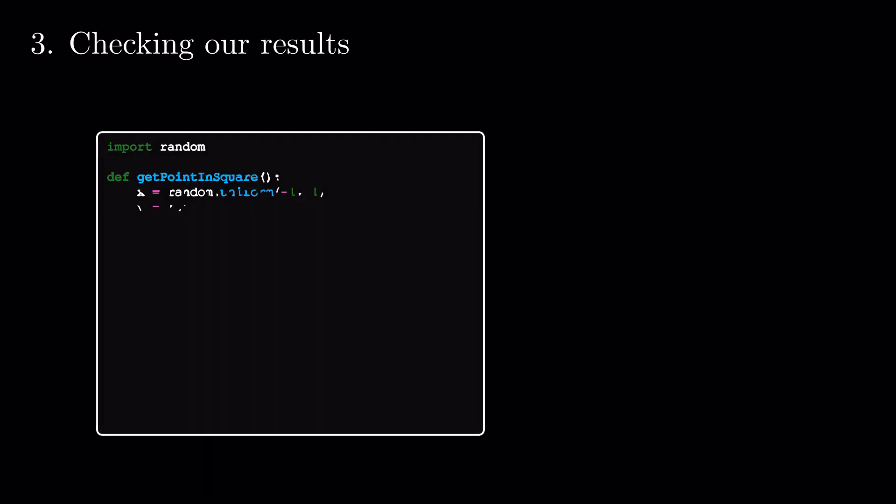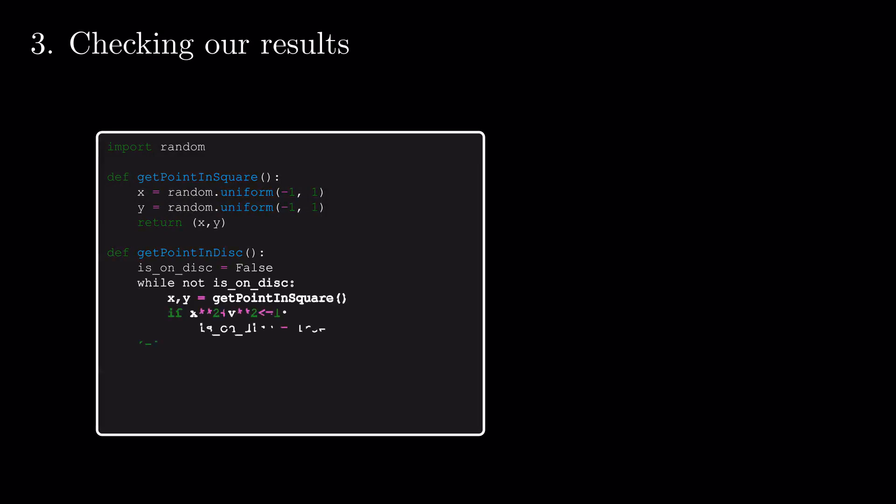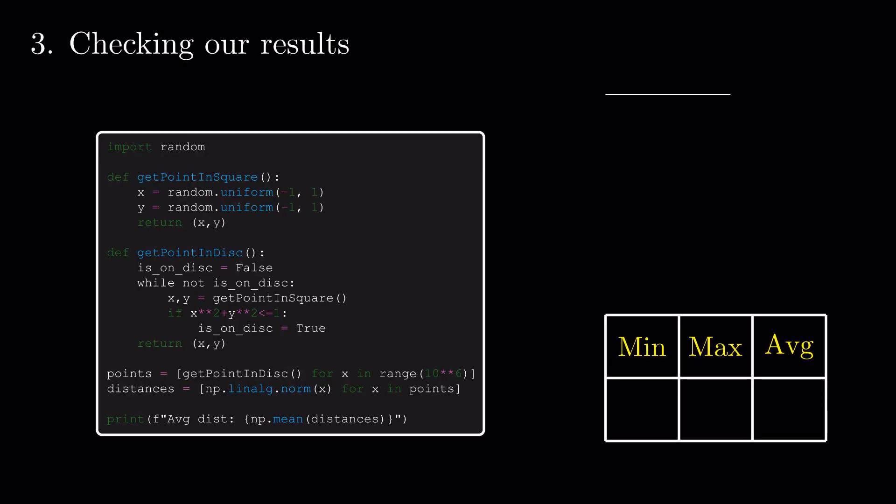And, the last method to find the expected distance is to simulate points on the disk using the given distribution. The code that I propose uses a more particular approach, simulating uniformly random points inside the square, and then cutting them to the inside of the disk.